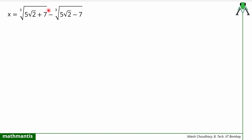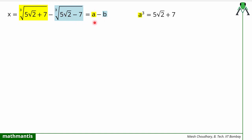To simplify this, I will assume this value to be 'a' and this value to be 'b'. Since 'a' is the cube root of (5√2 + 7), I can write a³ = 5√2 + 7. From here I can write b³ = 5√2 - 7.